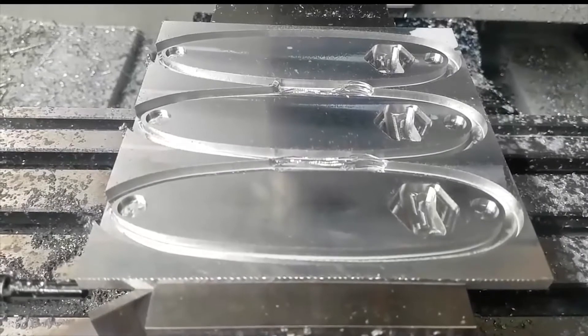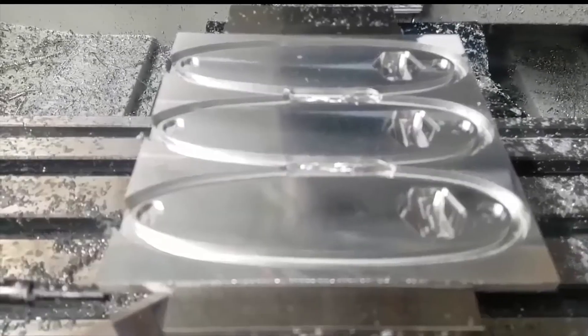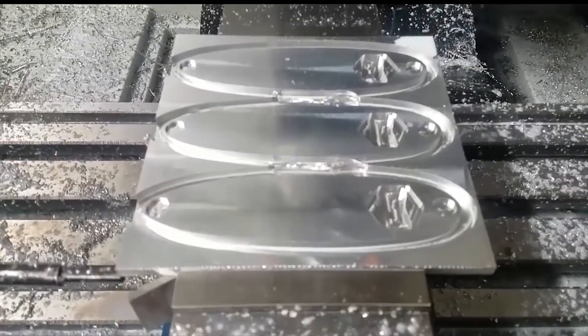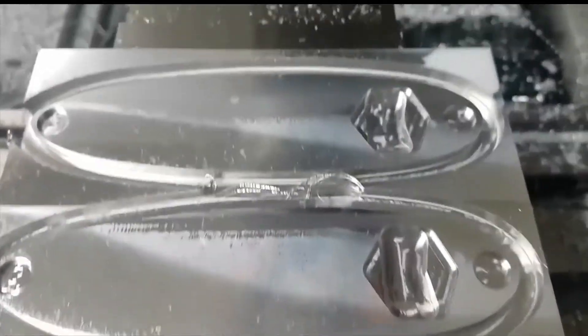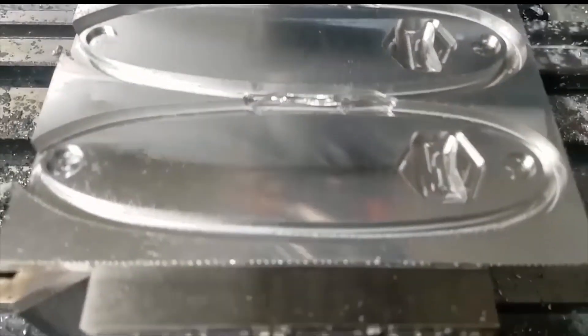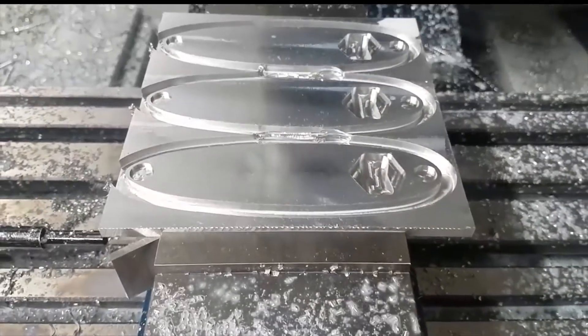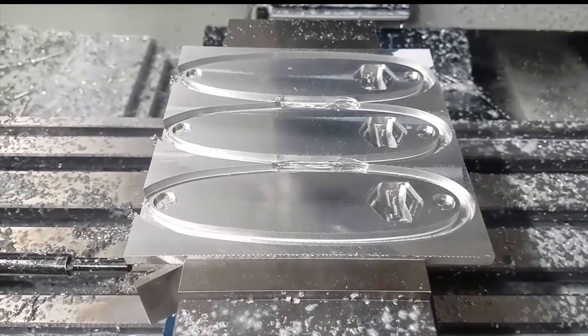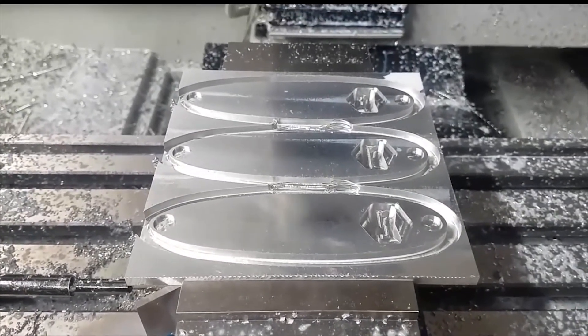So the quarter inch end mill has completed and this is what the part looks like after that pass. We will now move on to the drill to drill the hole for the screw that holds on the pen.